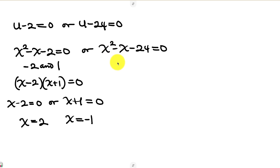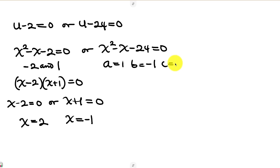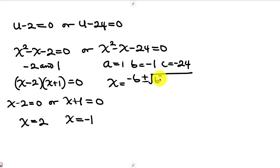For the second case, x² − x − 24 = 0 cannot be factorized easily, so we use the quadratic formula. Here a = 1, b = −1, and c = −24. The formula is x = (−b ± √(b² − 4ac)) / 2a.